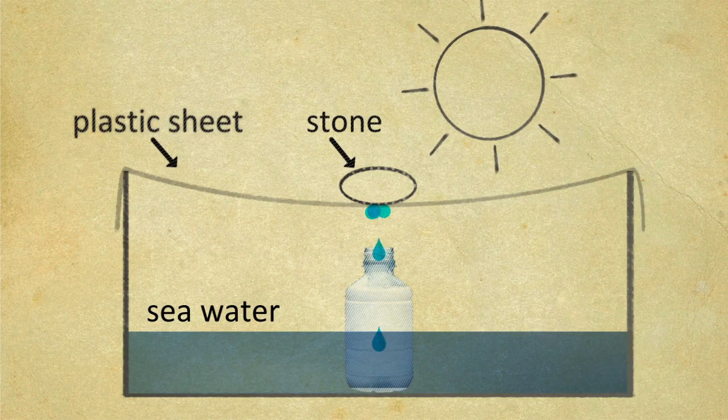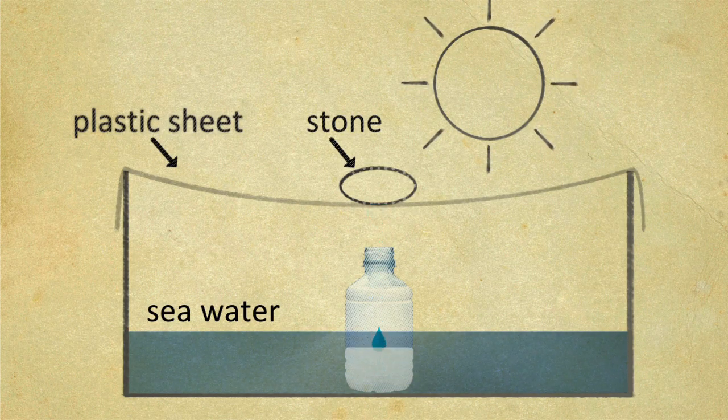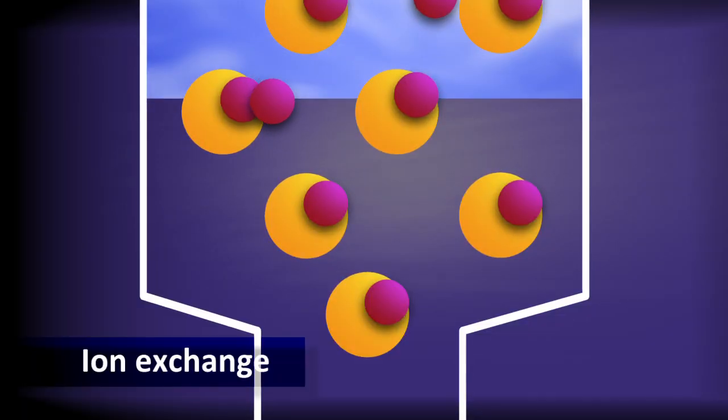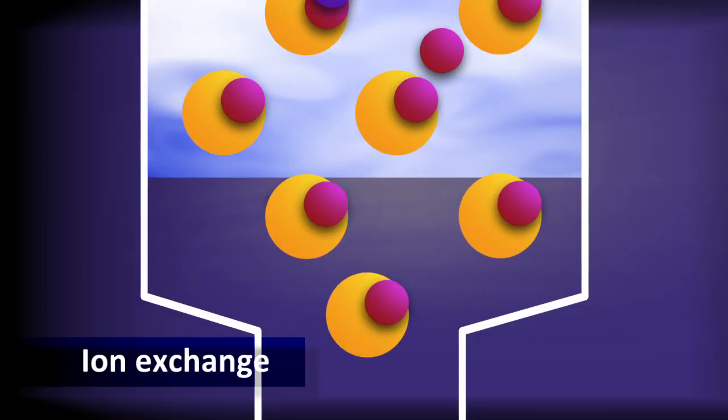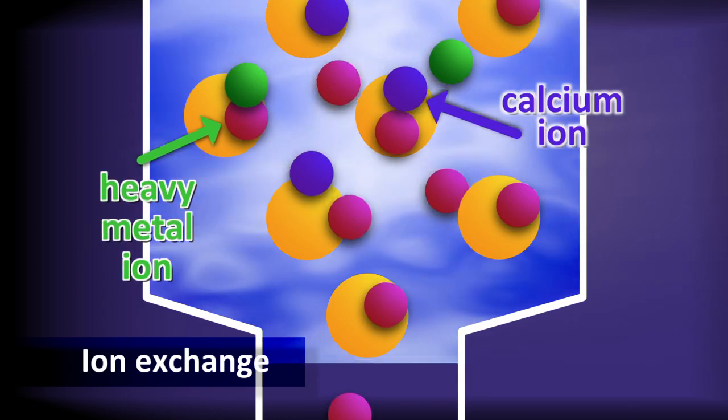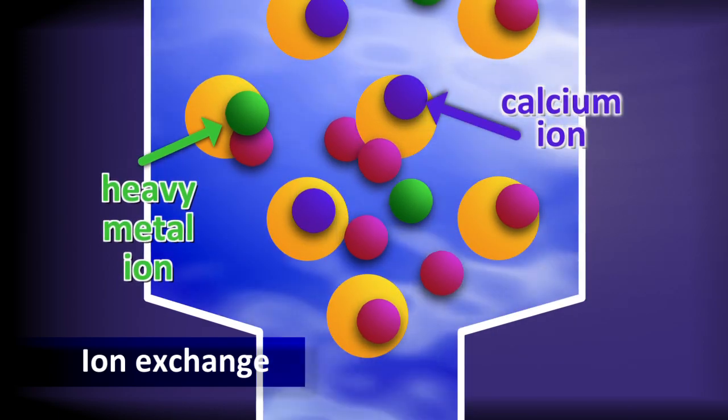As a result the pure or distilled water drips into my drinking container. Calcium ions and magnesium ions are adsorbed onto the surface of the bead.